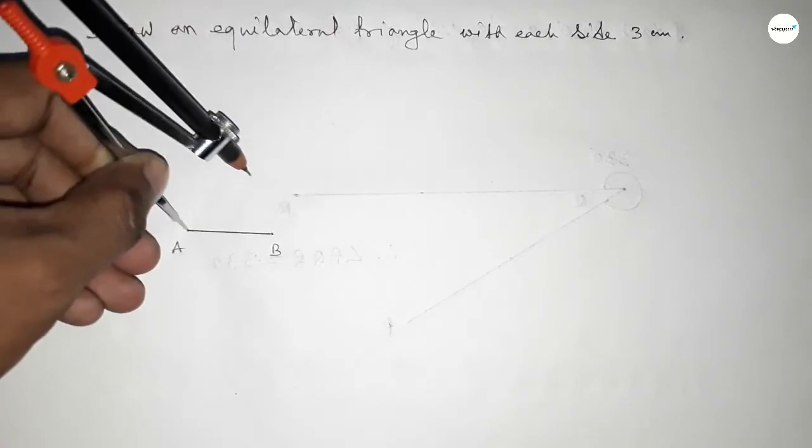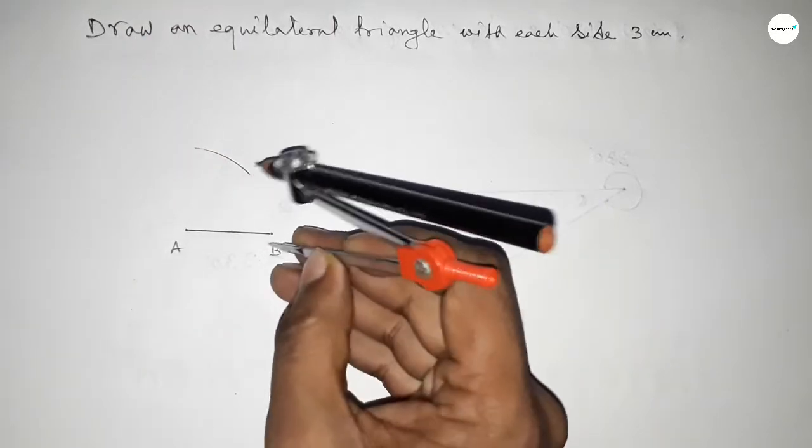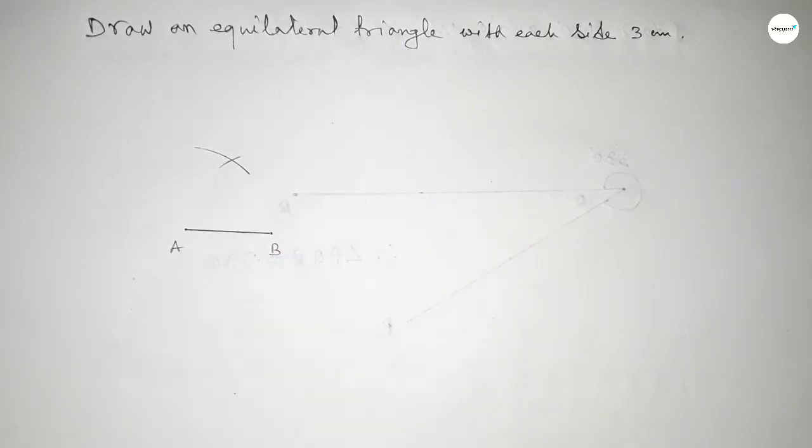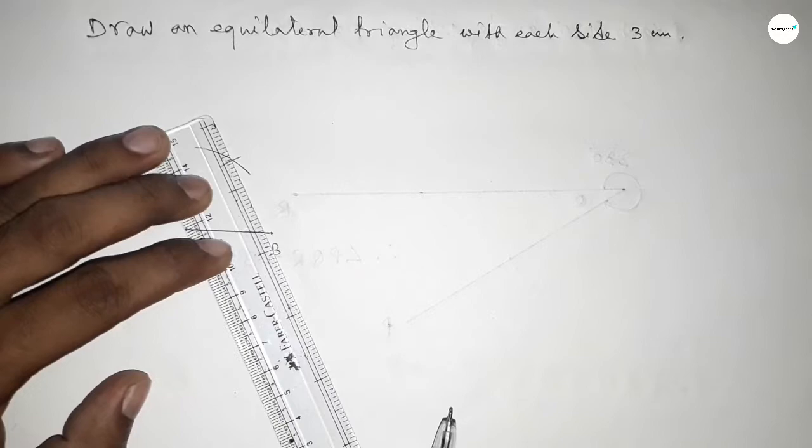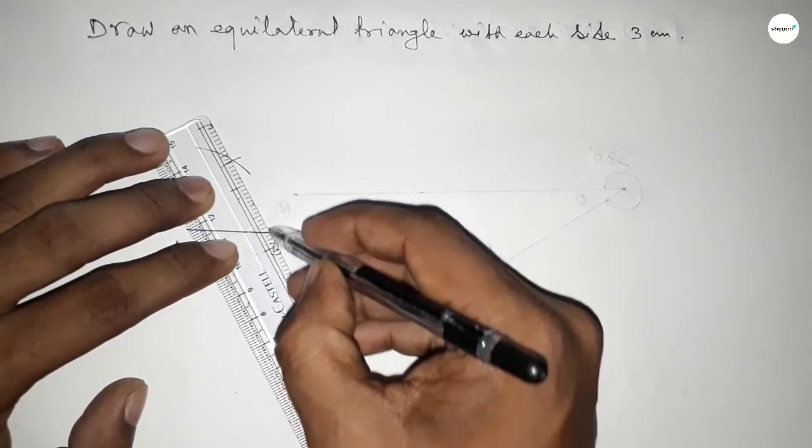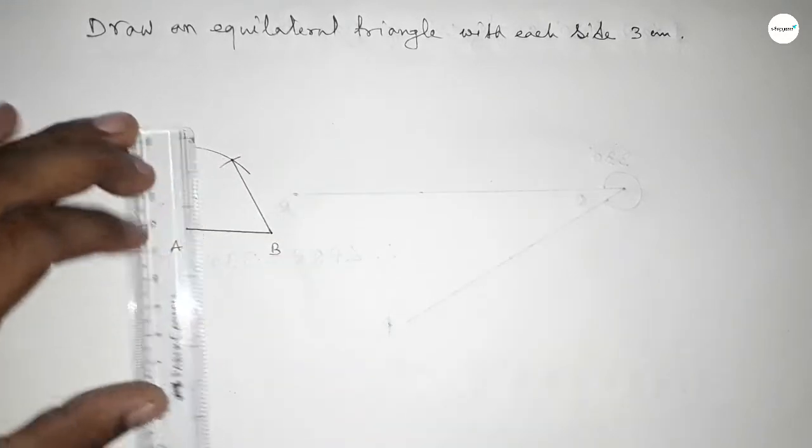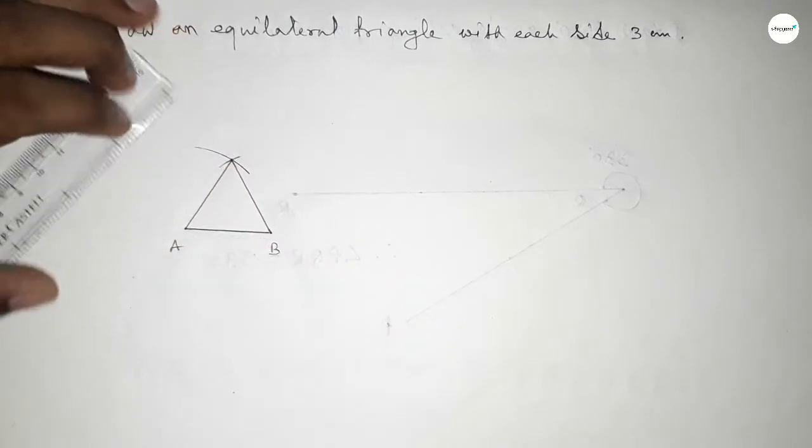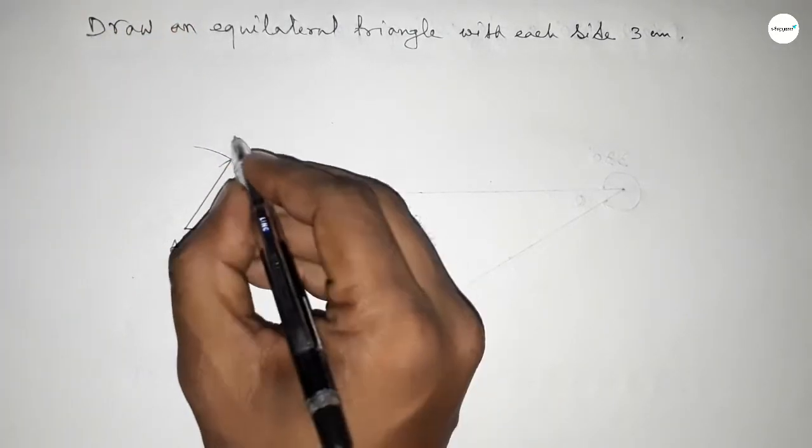And drawing here an arc with same length, and putting the compass here and cut here. Now both curves intersect at a point. Now joining this side and joining this side to get an equilateral triangle with each side 3 centimeter.